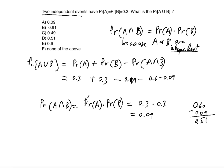0.6 minus 0.09 gives us 0.51. So the probability of A or B — since A union B means A or B — is 0.51, which is answer choice D. Hope you enjoyed this video, please subscribe and I'll see you in my next videos.